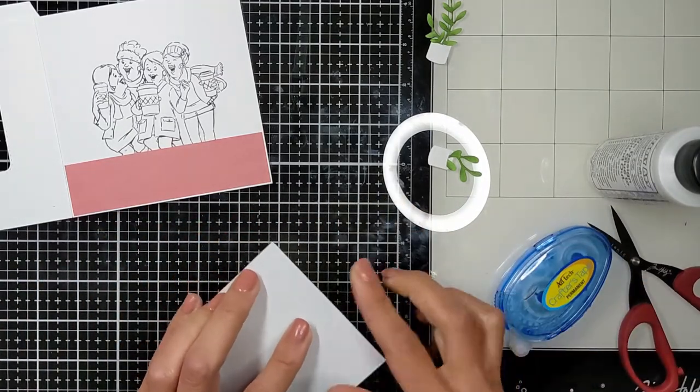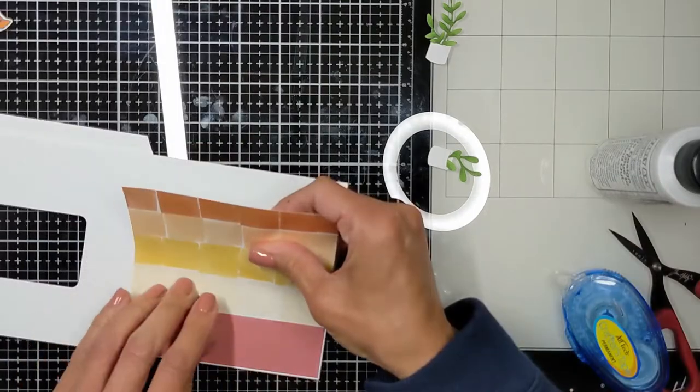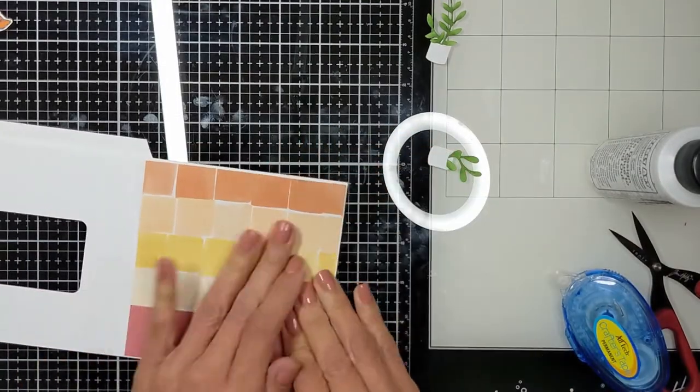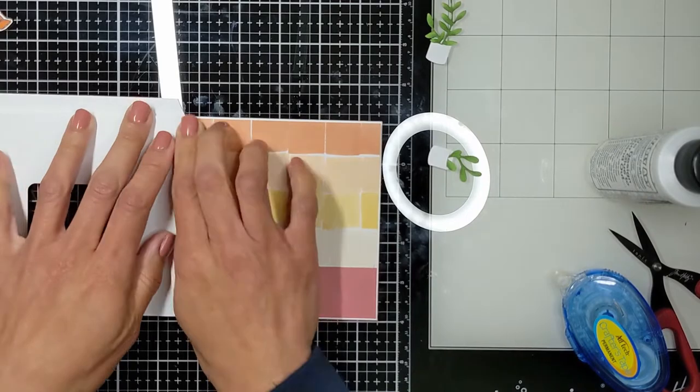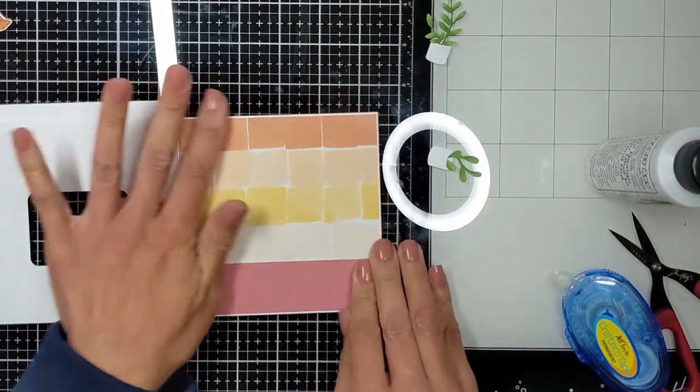And then for the background wall, I used this pattern paper that looked so cute and really brought the colors together from the girls.